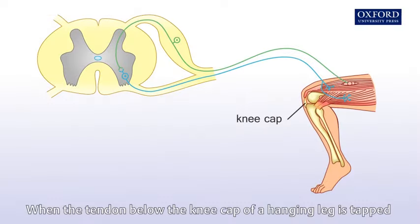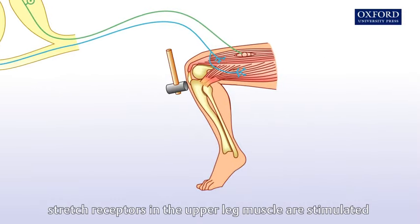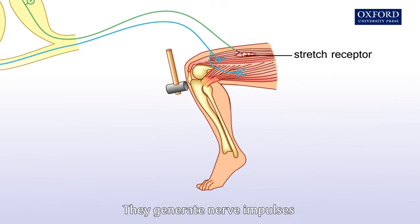When the tendon below the kneecap of a hanging leg is tapped, stretch receptors in the upper leg muscle are stimulated. They generate nerve impulses.